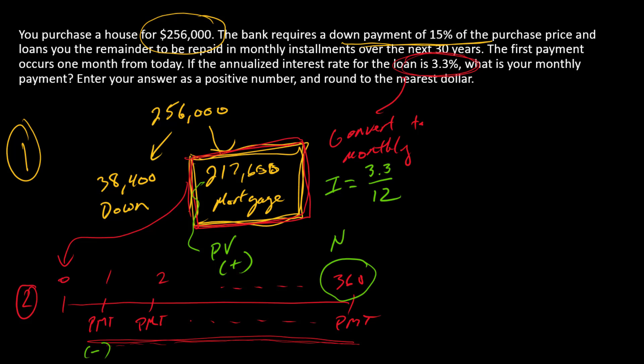And then finally, is there a future value that goes into our financial calculator? The answer to that is no, because there is no additional payment due at time 360 other than what's already been accounted for in the payment. So FV in this case is going to be zero. Alright, so let's go to our financial calculator.